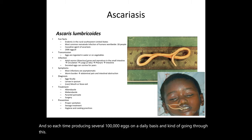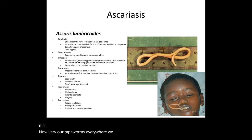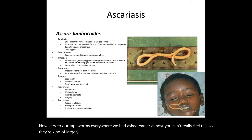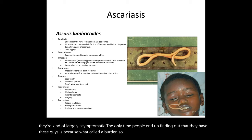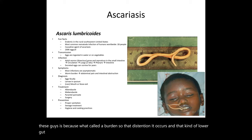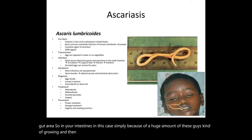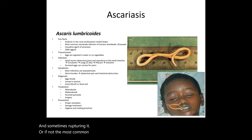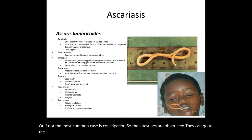Similar to tapeworms, most people are largely asymptomatic and can't really feel this. The main time people find out they have these is because of what we call worm burden — the distension that occurs in the lower gut simply because of a huge number of worms growing and distending the colon and intestines, sometimes rupturing it. The most common presenting symptom is constipation — the intestines are obstructed.